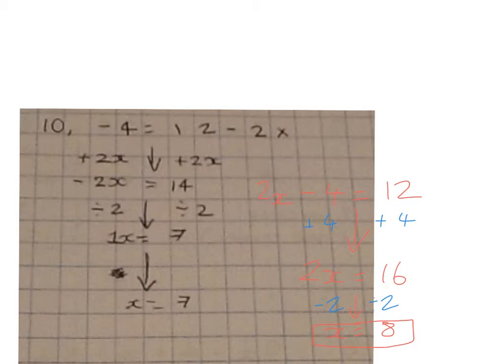And then we get x equals 8. Okay, there's a very easy way we can see if that's right. We can substitute this value, this 8, into here and see if it is actually true. So what I'm going to do by here is say minus 4 is equal to 12 minus 2 times 8.